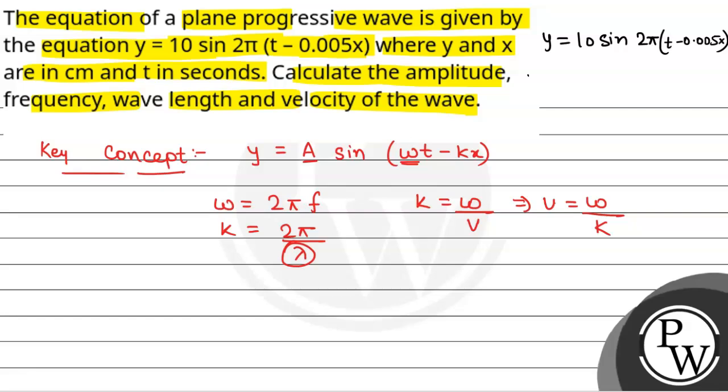That will be equal to 10 sin(2πt - 0.005 × 2πx). This will be the equation of plane progressive wave.